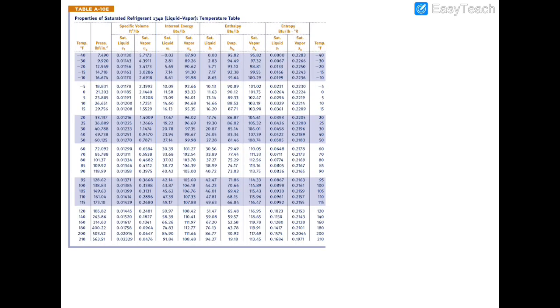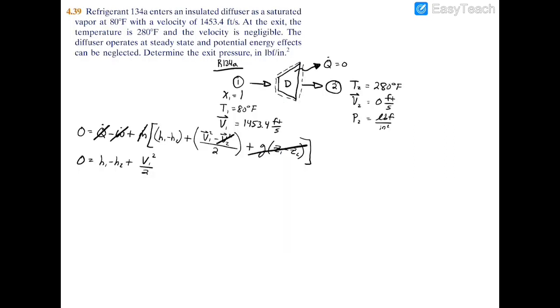Let's go to our properties table. At table A10E, which is the R134A saturated table for English units, we have 80 degrees Fahrenheit. We're looking at our saturated vapor HG at 112.56 BTU per pound mass. So we have 0 equals 112.56 BTU per pound mass - I'm going to designate pound mass instead of pound because you can get confused between pound mass and pound force. Next we'll subtract H2 and then add our V1 which is 1453.4 feet per second squared divided by 2.